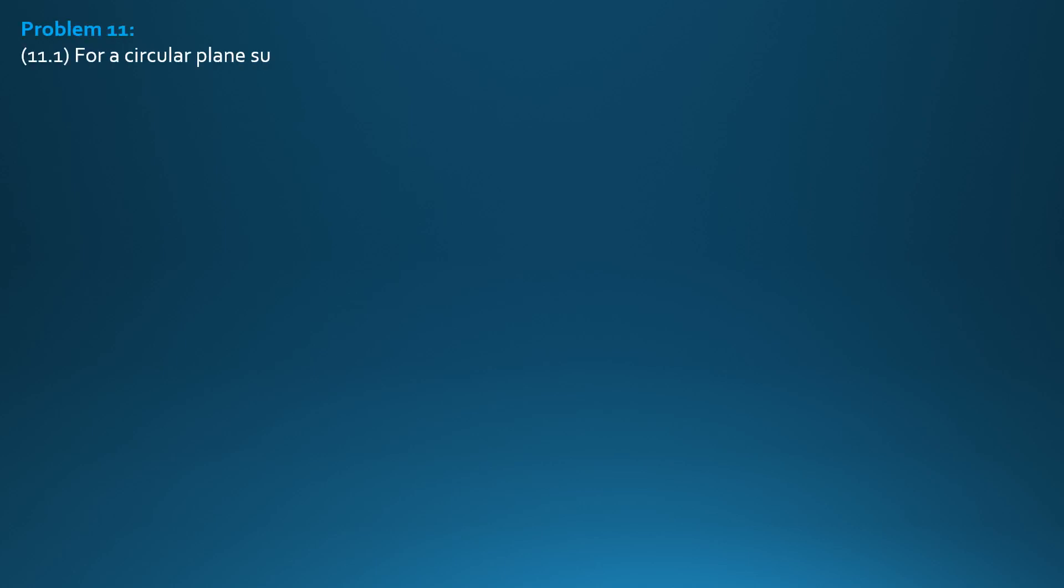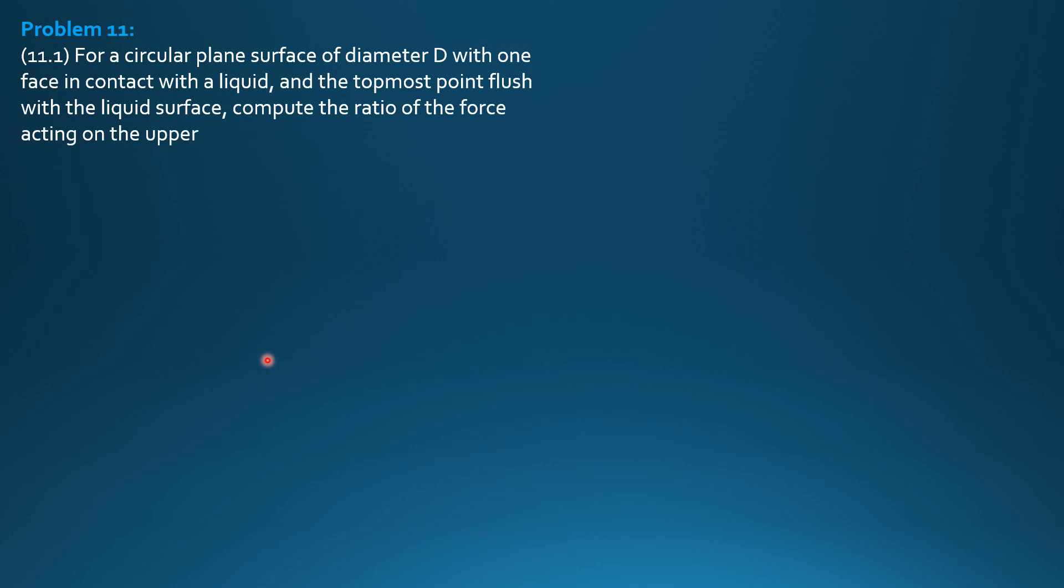Sample 11. For a circular plane surface of diameter D with one face in contact with the liquid and the topmost point flush with the liquid surface, compute the ratio of the force acting on the upper half to that acting on the lower half of the area.